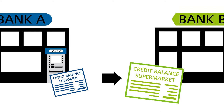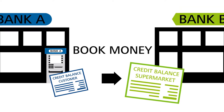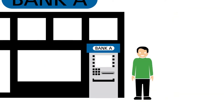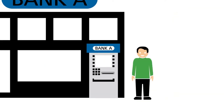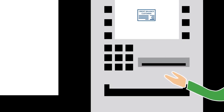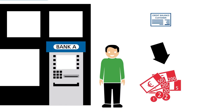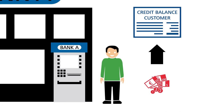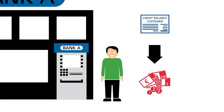The credit balance in a bank account is known as book money. The banks book their customers' payments to their bank accounts. When a bank customer withdraws money from his or her account, the book money is turned into cash. When a customer makes a cash payment into the account, the cash becomes book money again. No new money is created by withdrawing from or paying into an account — the money merely changes its form.